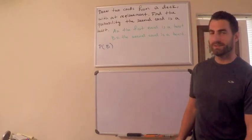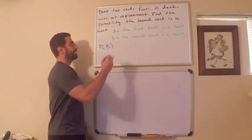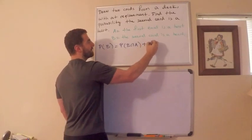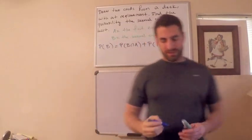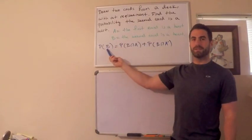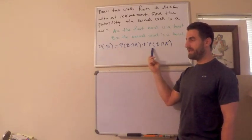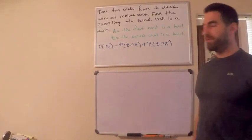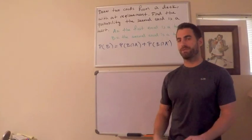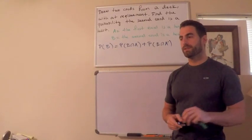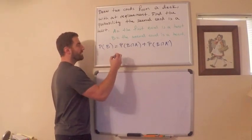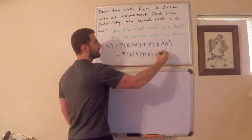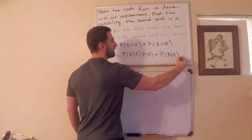For any event B, this equals the probability of B and A happening, or the probability of B and not-A happening — because A either happened or it didn't. By the definition of conditional probability, this equals P(B|A)·P(A) plus P(B|not-A)·P(not-A).